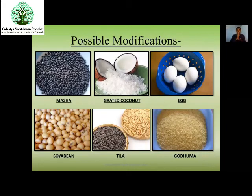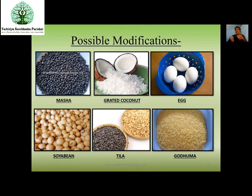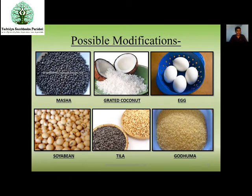Possible modifications: we can add Masha because the motto behind Shastika Shali Pinda Sveda is Brahmana (nourishment). Whichever items cause Brahmana can be used — like Masha, grated coconut, Yava, Soyabean, Tila, or Goduma. Soak Masha the previous night and use the next day. If using Masha plus rice, we can call it Masha Shastika Shali Pinda Sveda. Depending on the condition, we can use these kinds of alternatives. When more Brahmana is required, Yava or Soyabean or Goduma can also be used.